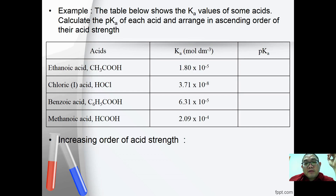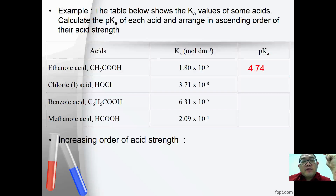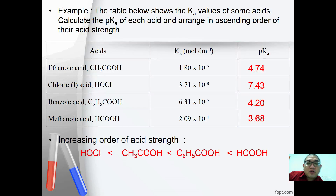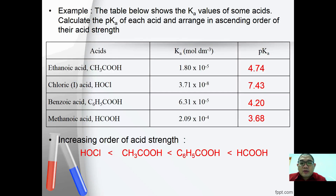Ethanoic acid has a Ka of 1.80 × 10⁻⁵ and a pKa of 4.74. Chloric acid has a pKa of 7.43. Methoxid acid has a pKa of 4.20. Methanoic acid has a pKa of 3.68. The increasing order of acidic strength is: HOCl (weakest), followed by ethanoic acid (CH₃COOH), then phenylacid (C₆H₅COOH), and methanoic acid (strongest).